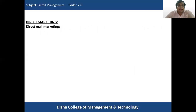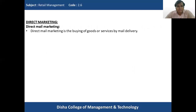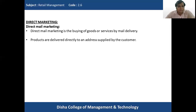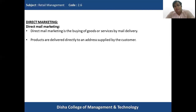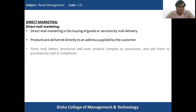The first type of direct marketing is direct mail marketing, which is the buying and selling of goods or services by mail delivery. Products are delivered directly to an address supplied by the customer. Firms mail letters, brochures about the products, and even product samples to customers, asking them to make a purchase by telephone or mail.